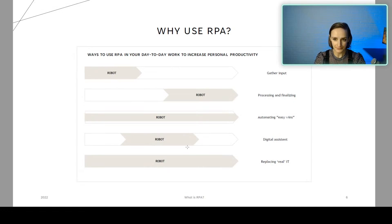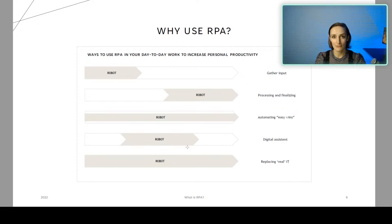Why and how should you use RPA? From building several hundreds of robots, here are some of the most common use cases. The white parts represent human interaction and the gray parts are where the robot is working. Either the robot gathers input and the human makes a transaction based on that, or the opposite — the human gathers and decides while the robot processes and finalizes. The most common use case is automating the easy wins — aiming for 50 to 80% of the iterations of a given task, with a human handling the last 10 to 20%.